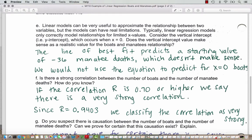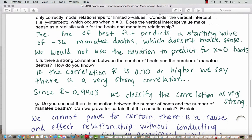Is there a strong correlation between the number of boats and the number of manatee deaths? How do you know? When the correlation, the r value, is 0.70 or higher, we say there is a very strong correlation. So here, since the correlation value is 0.9403, we can definitely classify this relationship as a very strong correlation.